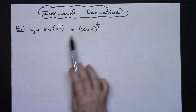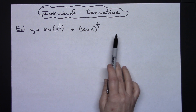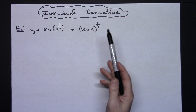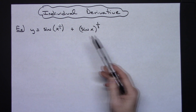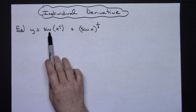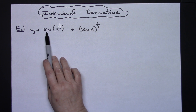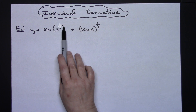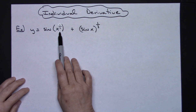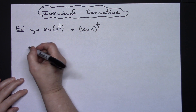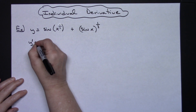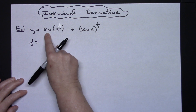I've got two terms in this equation, so I'm going to focus on the first term and then the second term and work each derivative out. For the first term, my outside function is sine and my inside function is x to the 1/3rd.